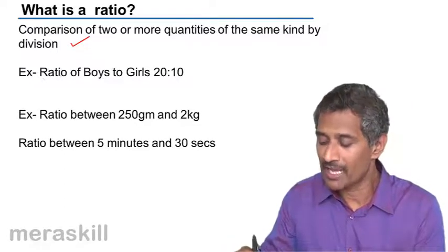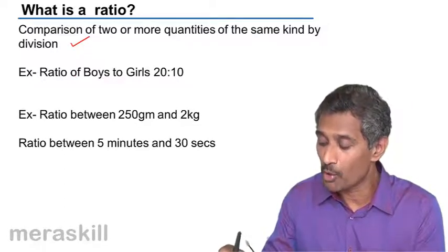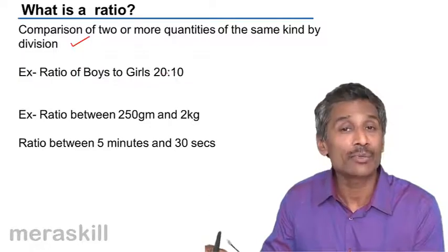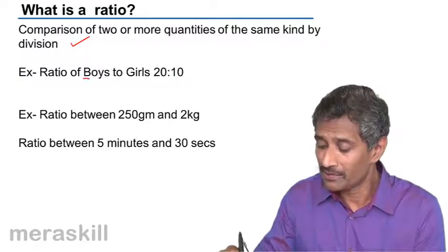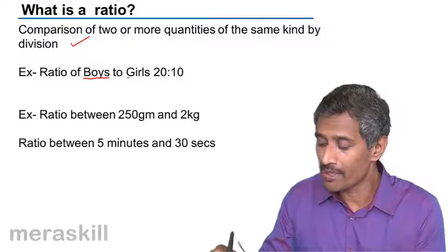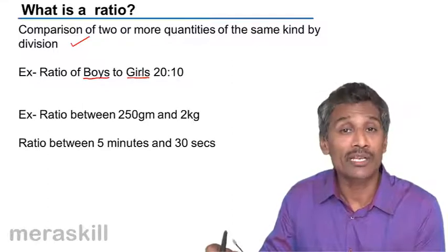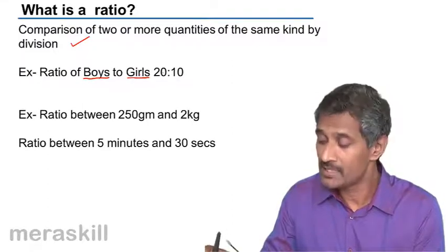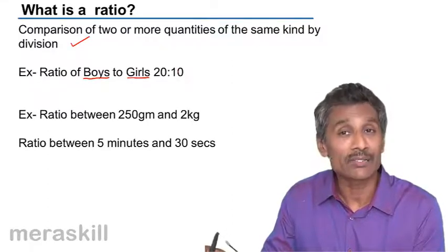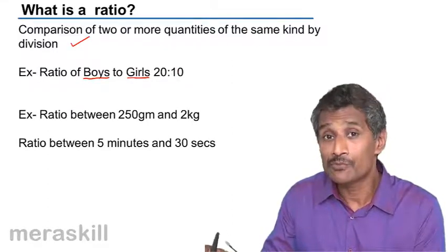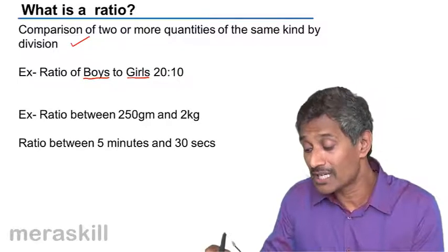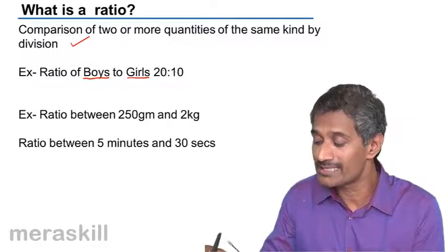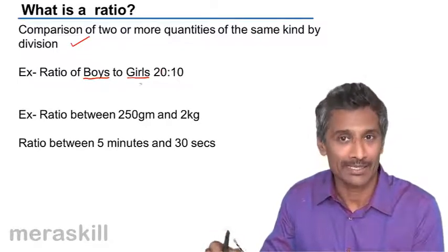For example, here we have the ratio of boys to girls is 20 is to 10. We are comparing the number of boys to the number of girls. And remember the inverse ratio — the ratio of girls to boys is 10 is to 20.